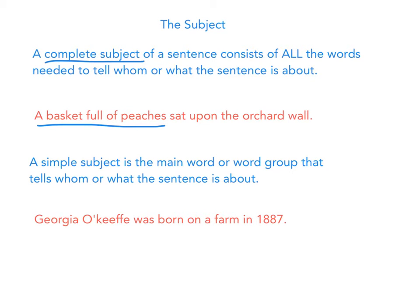A simple subject is the main word or word group that tells whom or what the sentence is about. So now we want to find the simple subject. Who or what sat upon the orchard wall? It is 'the basket.'